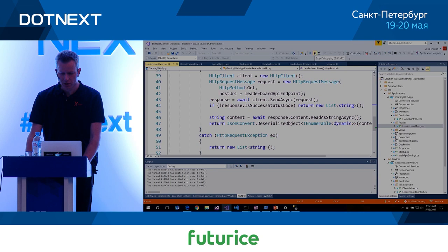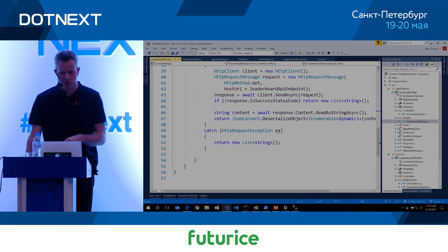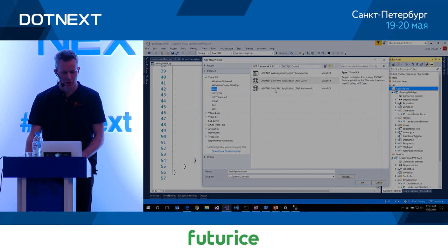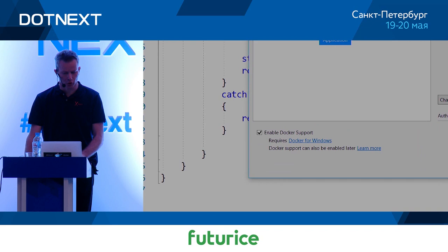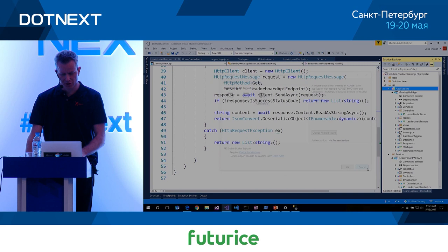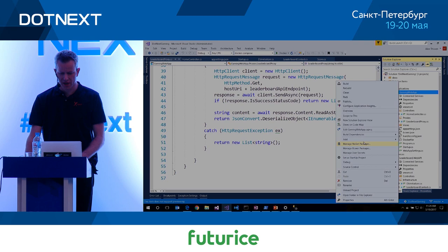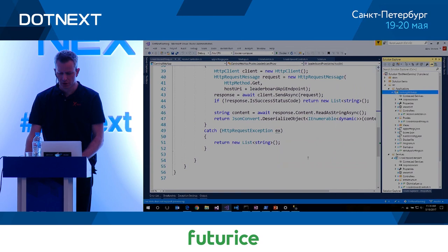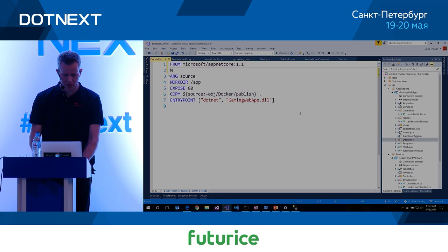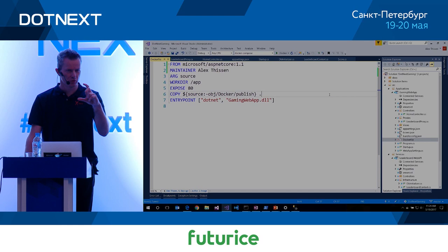In Visual Studio 2017 when you add projects to your solution you can tick a box to add Docker support. If you don't do it upfront, you can do it afterwards via 'Add Docker Support'. When you do, a Dockerfile is added. Microsoft built IntelliSense for it — for example you can set the maintainer. The Dockerfile is used to specify how images are built.